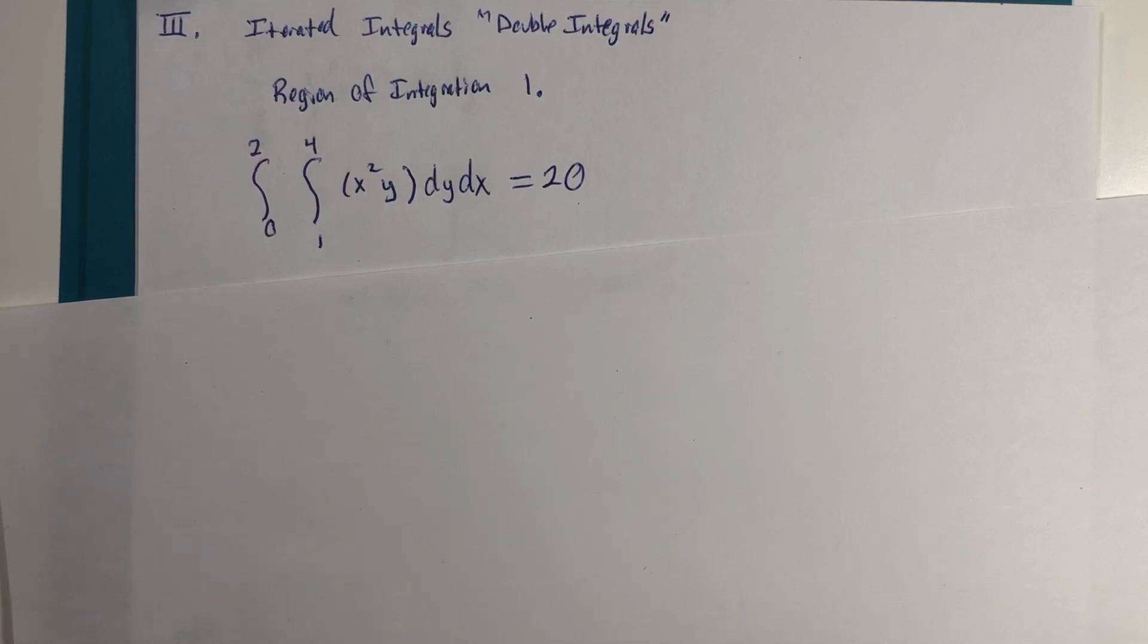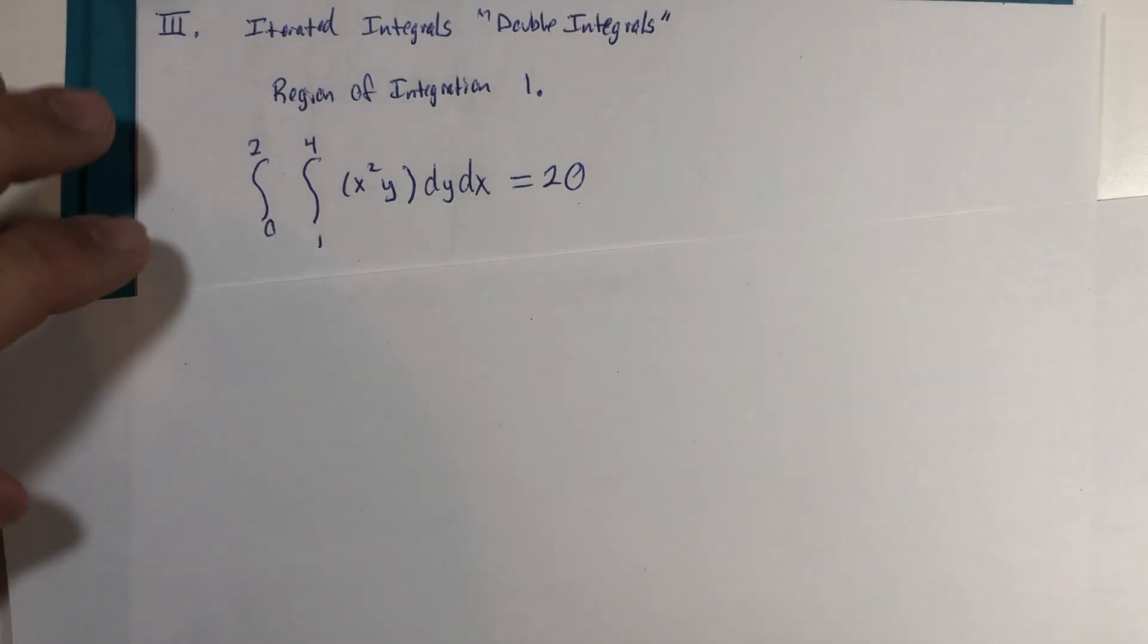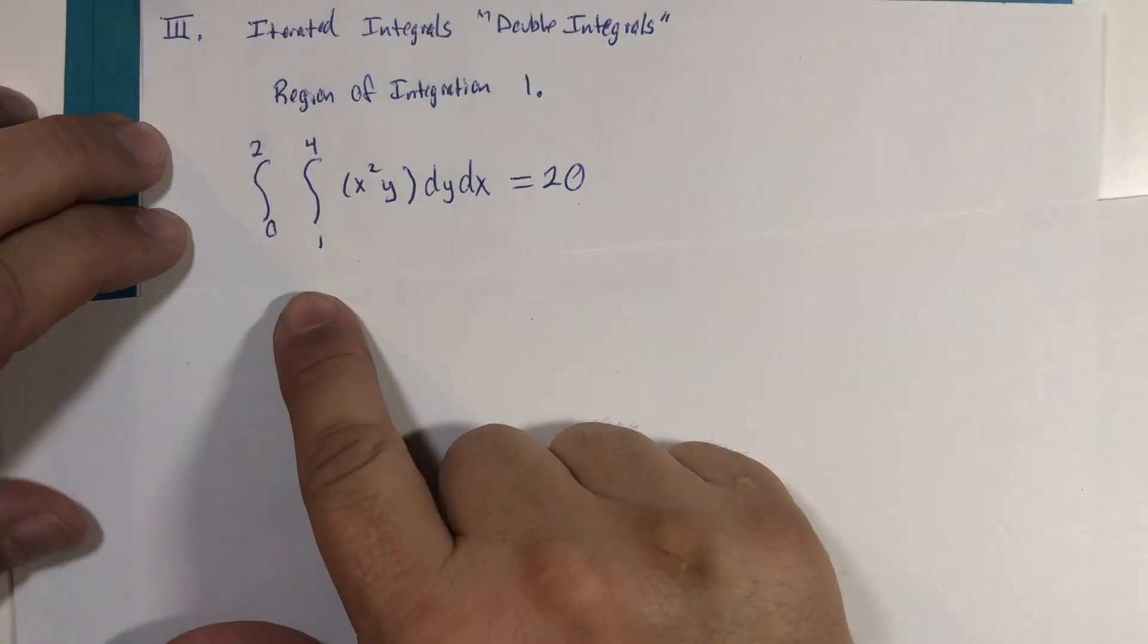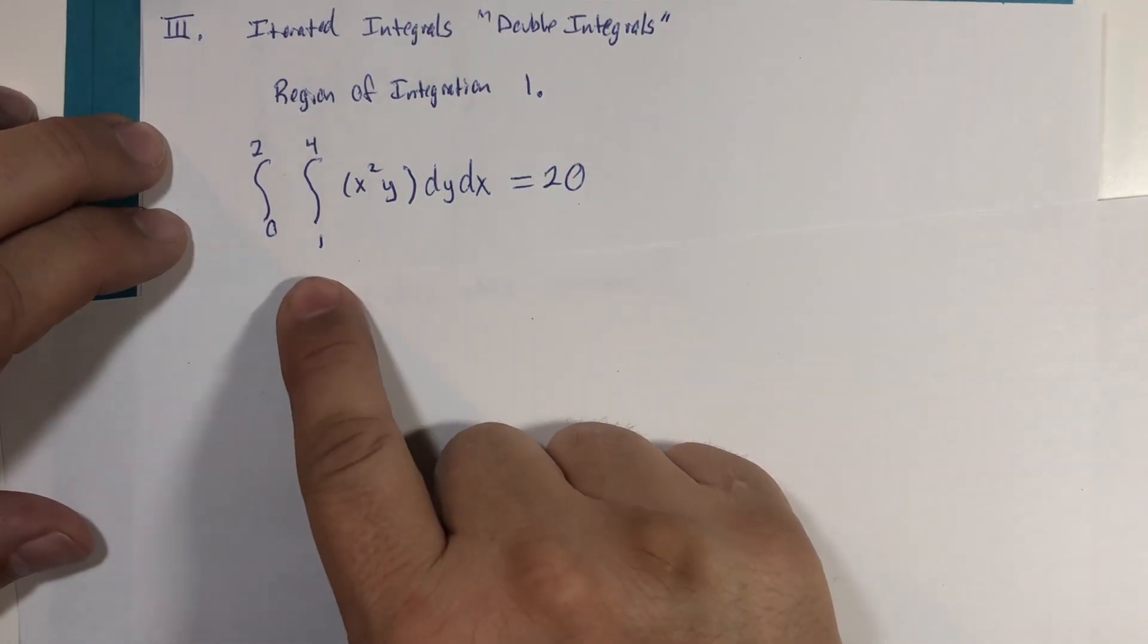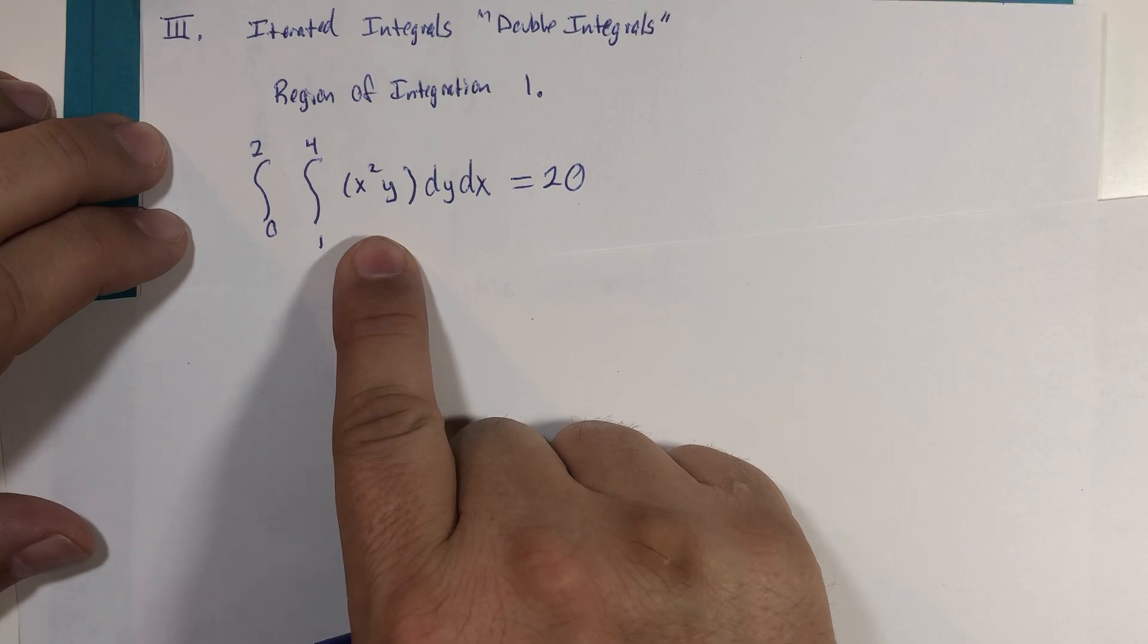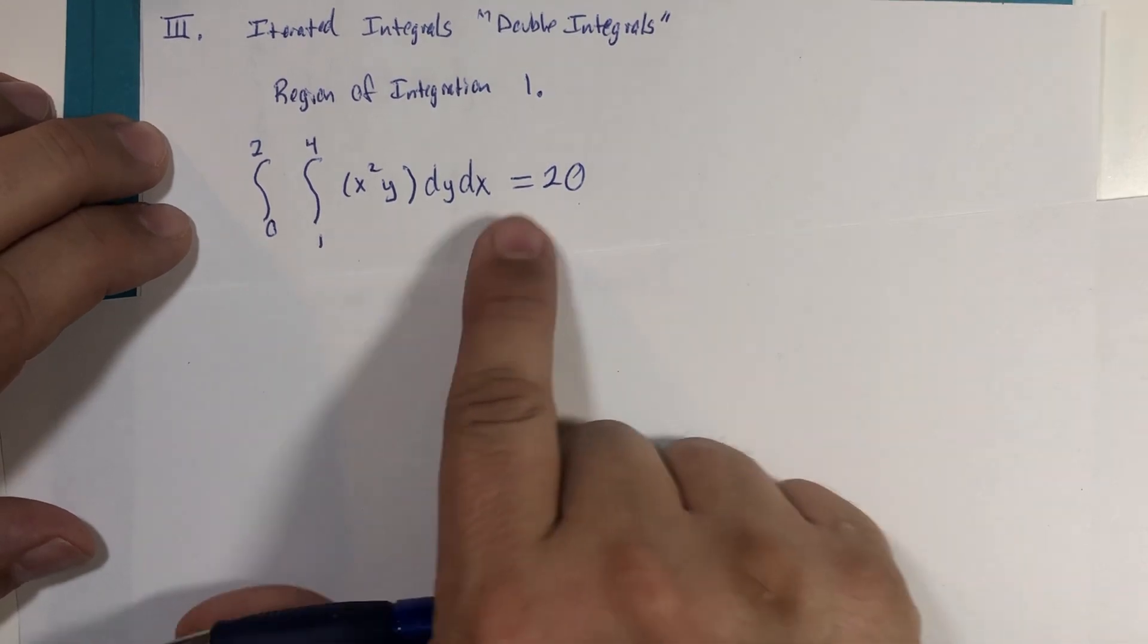Okay, let's begin to dive into this mystery of the meaning of this iterated or double integral. As you recall from the last little segment, we evaluated this double integral with this x squared y expression as the integrand, and we got 20.